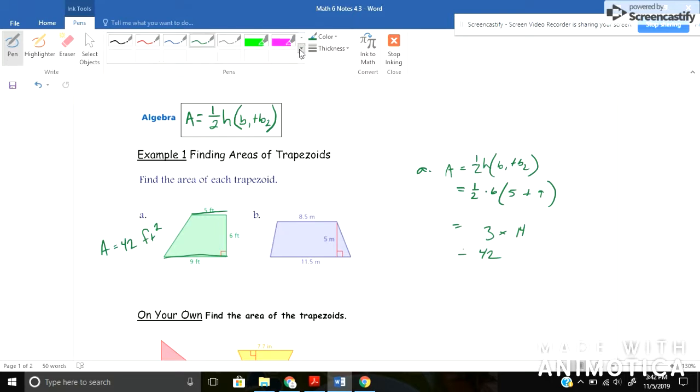All right, let's go to letter B. Now I wonder if I have purple as a choice. I don't see it, well maybe if I go here, oh there we go. All right, so letter B, I'm going to do something similar: one half times my height which is five times my bases added together.